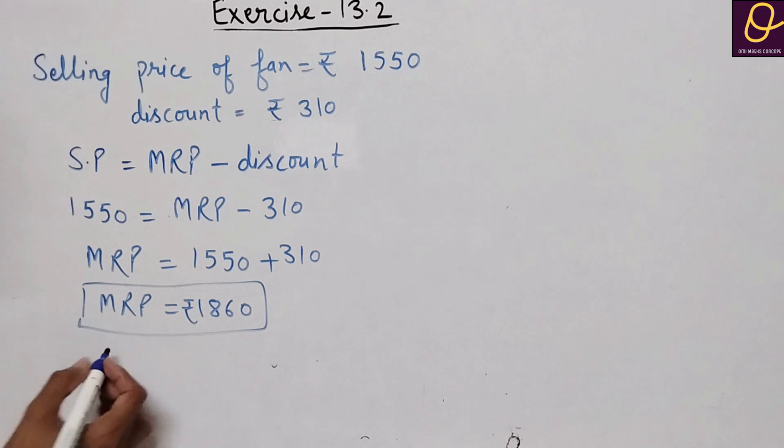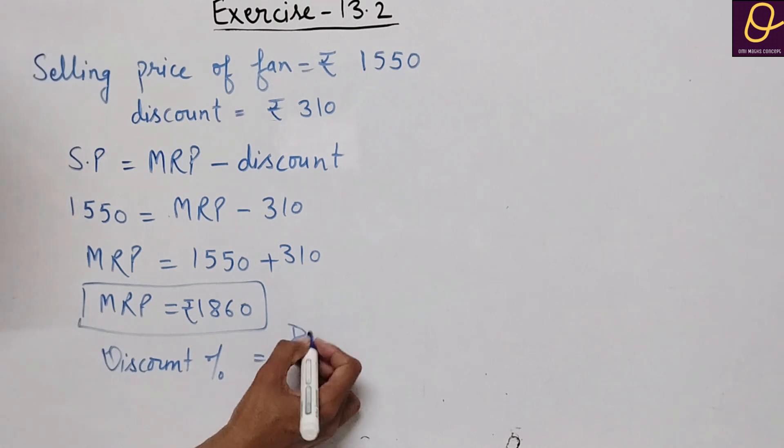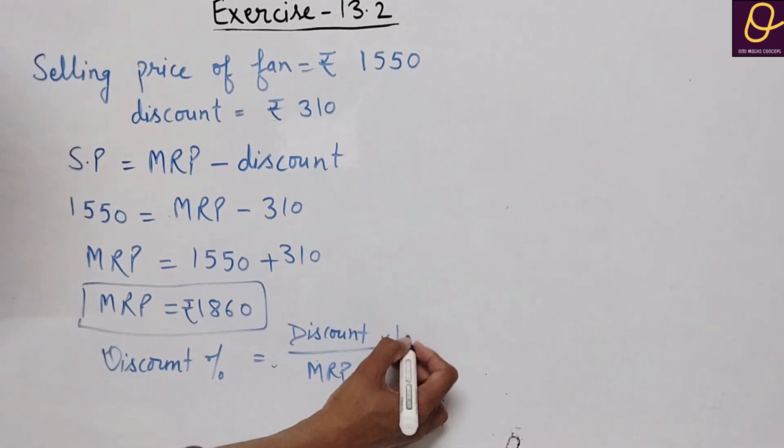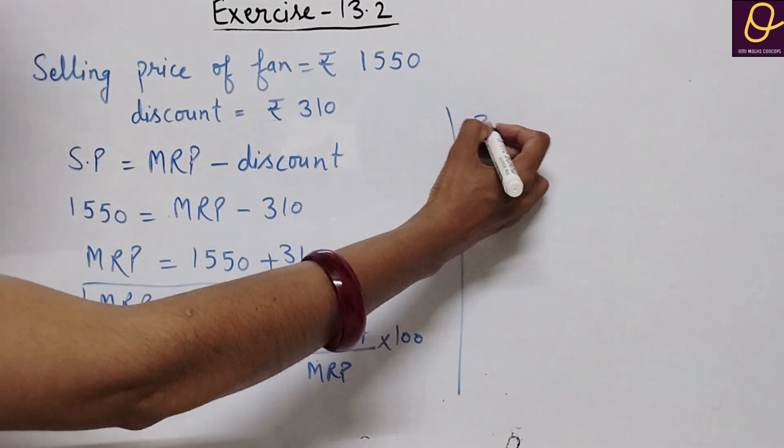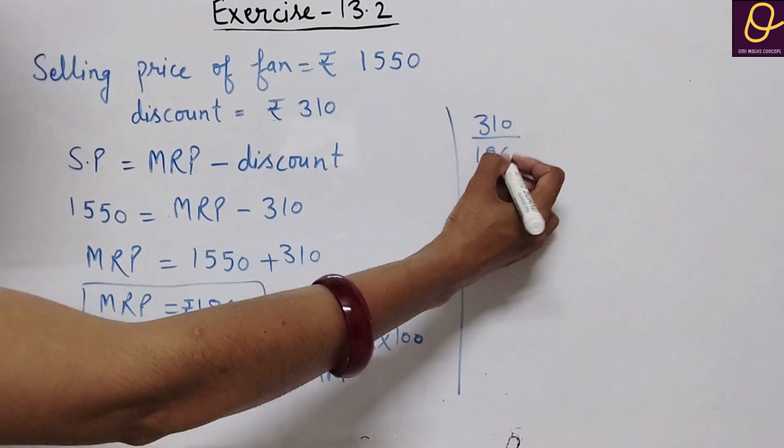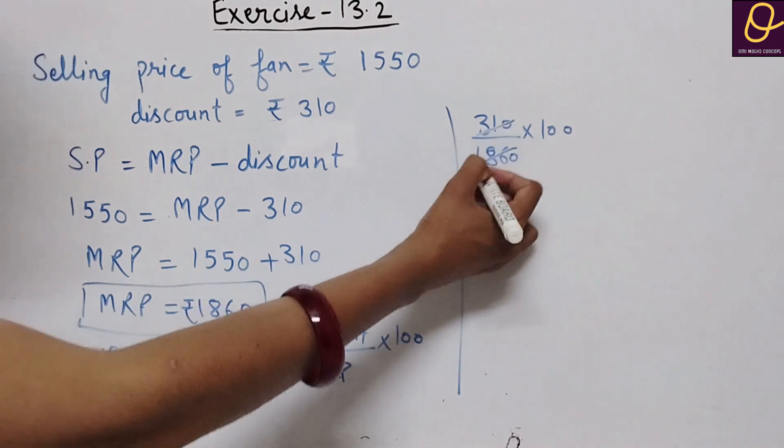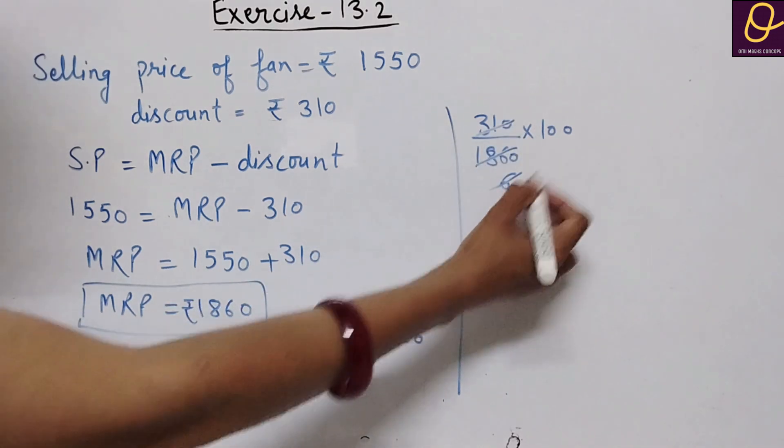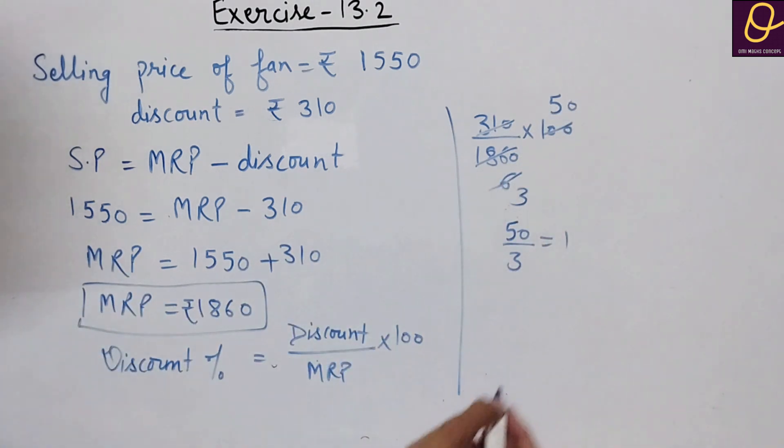Now discount rate we need to find out. Discount percent is equal to discount divided by MRP into 100. That will be equal to 310 divided by 1860 into 100. Canceling, two three and two five is ten, zero, that is equal to 50 by 3.